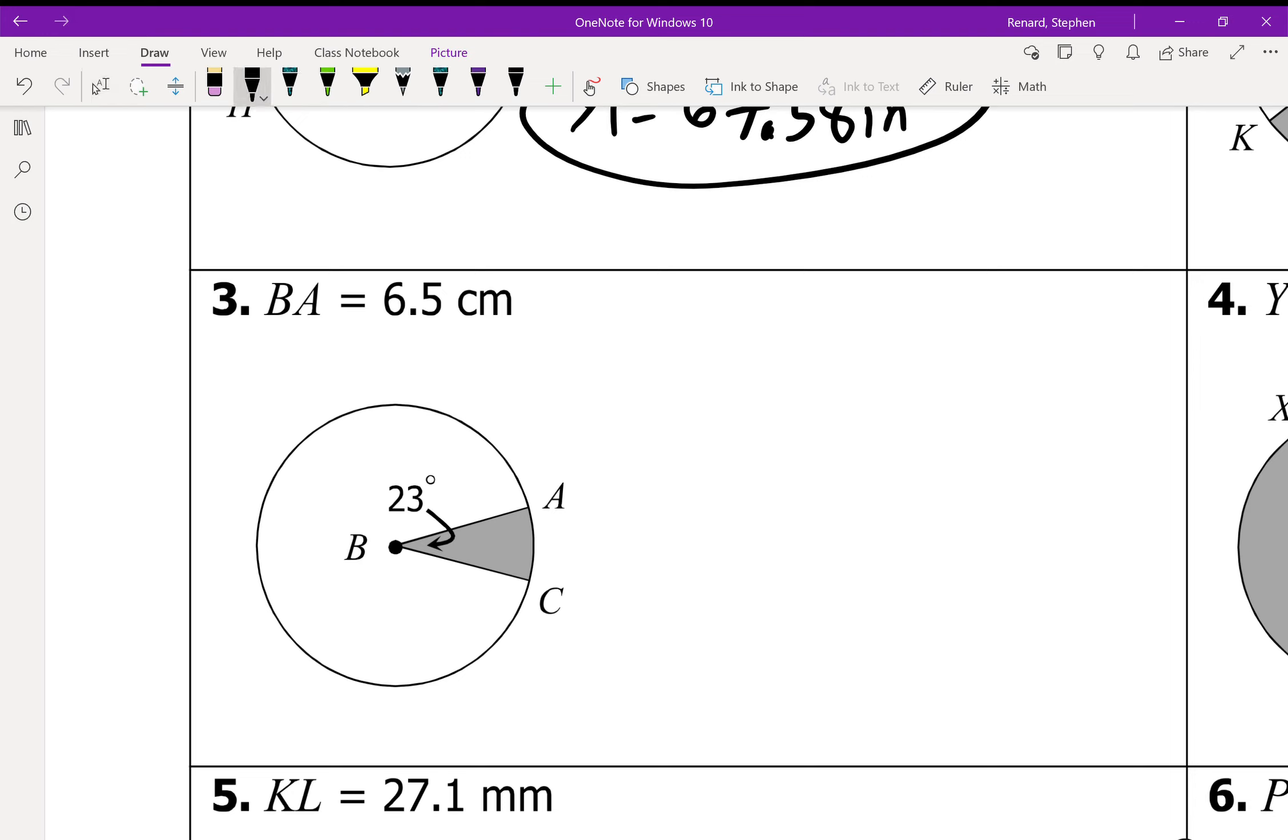So, 23 degrees, B to A is 6.5 centimeters. So the shaded area is equal to pi times 6.5 squared times 23 over 360. So 6.5 squared times pi times 23 divided by 360 equals 8.48 square centimeters to the nearest hundredth.